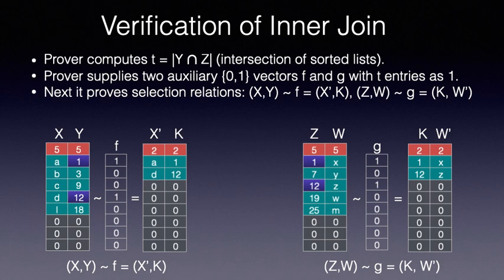The verification of inner join reduces to first, correctly computing the size of the intersection. Call it t. Prover providing two auxiliary binary vectors f and g containing t ones each, as in exactly t entries in those vectors are 1. The idea is that f represents the row selection that happens on the left data set during the join, while g represents the row selection that happens on the right data set during the join, with the two selections agreeing on the collapsed joining column. So this verification can be done using two instances of selection verification. The costliest step in the whole verification? That's the innocuous size of the intersection computation. It involves comparisons and hence the bit decomposition.